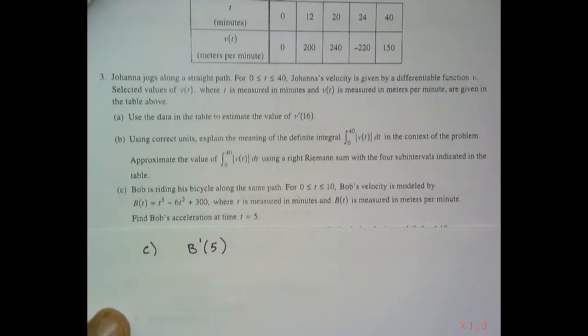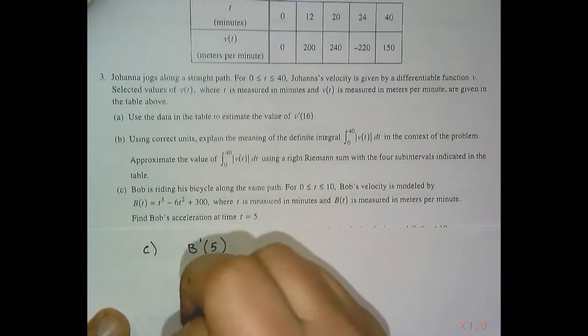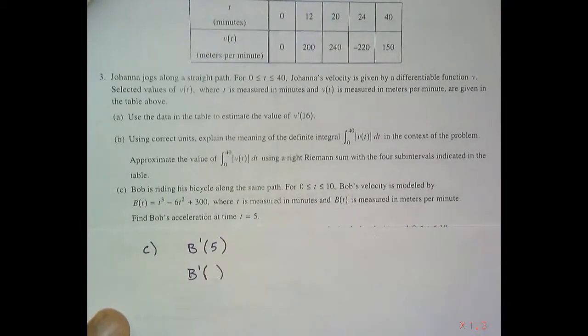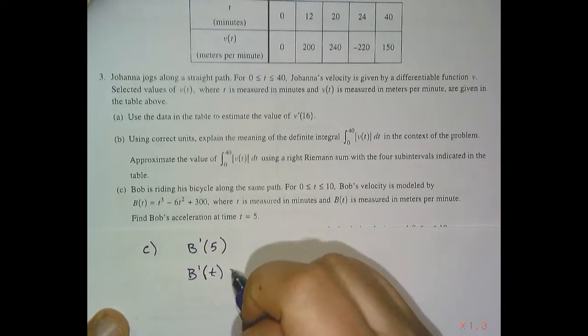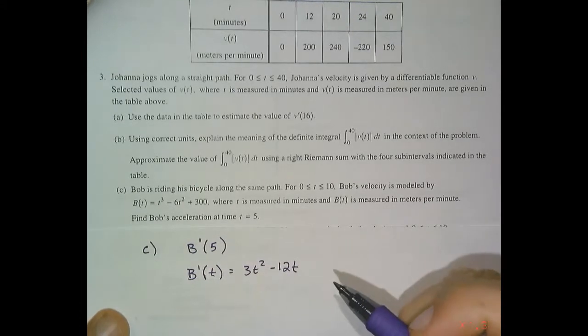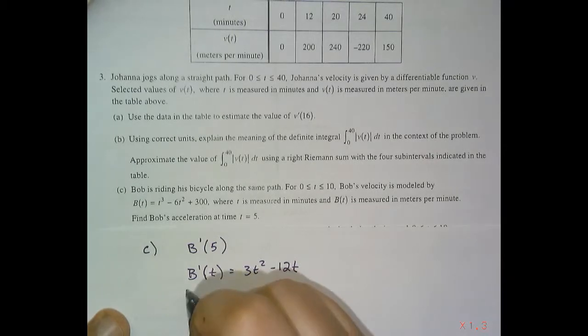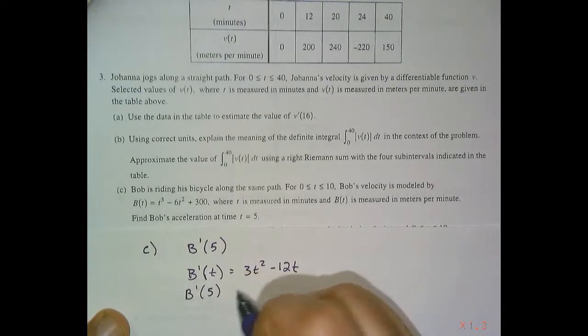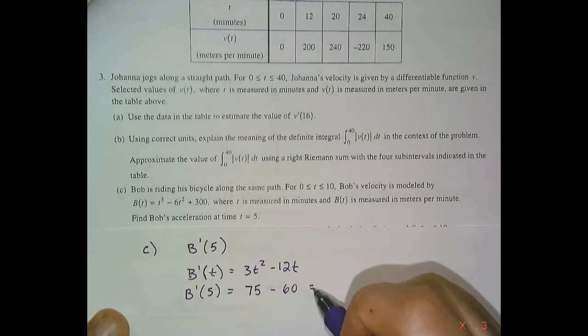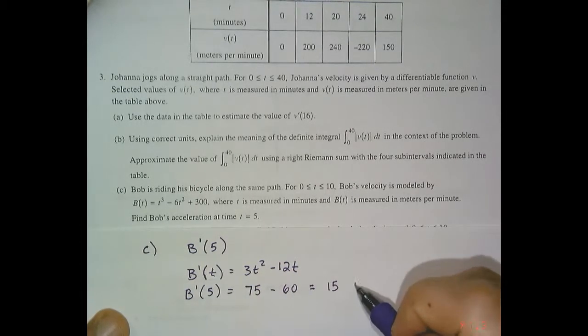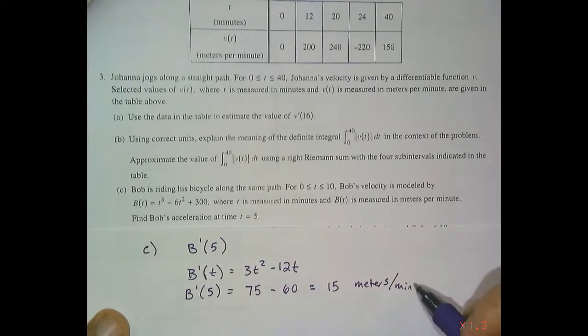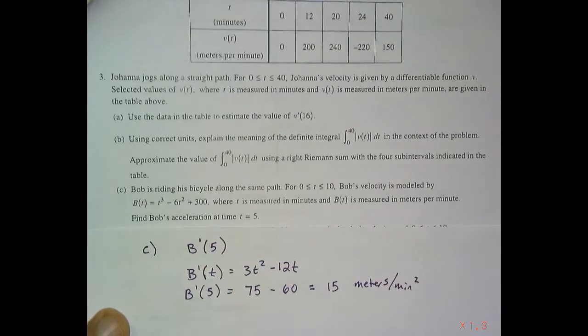Since this is a non-calculator question, we want to do this without the calculator. B prime of T is 3T squared minus 12T. And then B prime of 5, we plug 5 into that and we get 75 minus 60, which is 15. Still traveling in meters per minute, and because we are calculating acceleration, meters per minute squared.